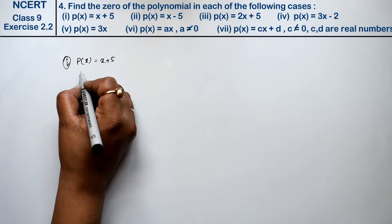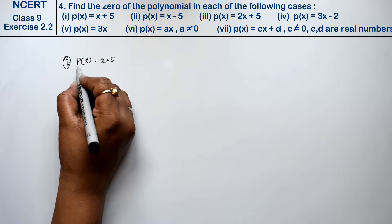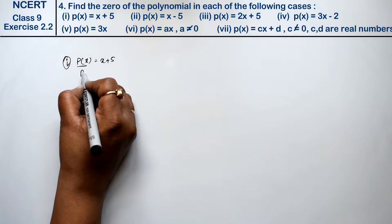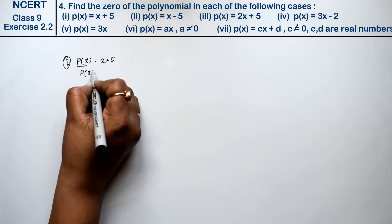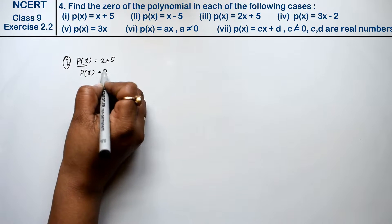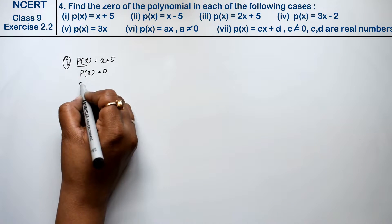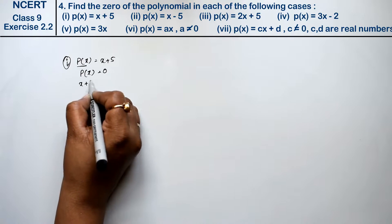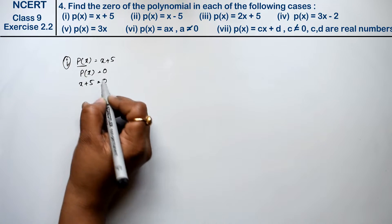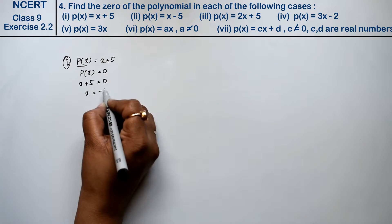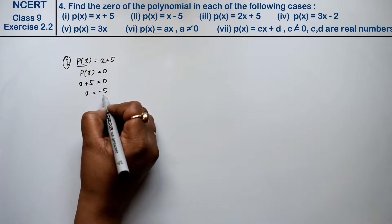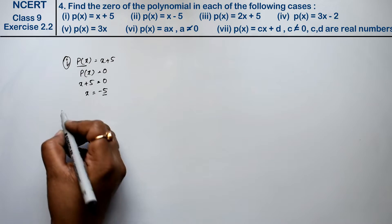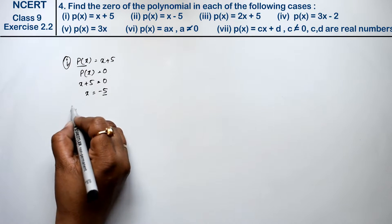Zero of the polynomial निकालने के लिए इस value को equal to 0 रख देते हैं. तो x plus 5 equals to 0 रख दिया. तो x की value क्या आगई? Minus 5. This is the zero of the polynomial.